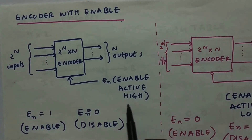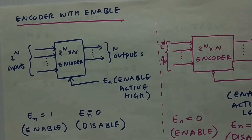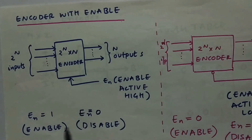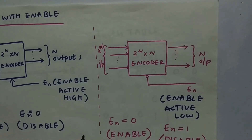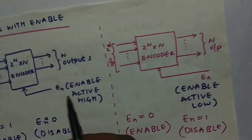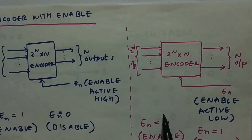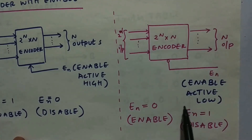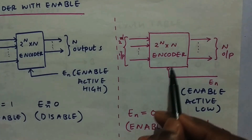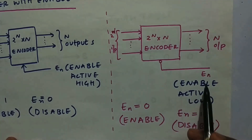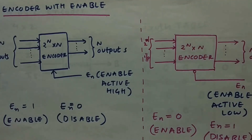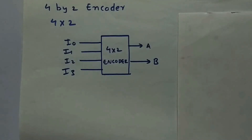The encoder with enable adds an extra input called enable used to control the encoder. For active high enable, whenever enable equals 1, the encoder works; if enable equals 0, it does not work. For active low, a NOT gate is added to the enable input, so whenever enable equals 0, the encoder works, and whenever enable equals 1, the encoder is disabled.